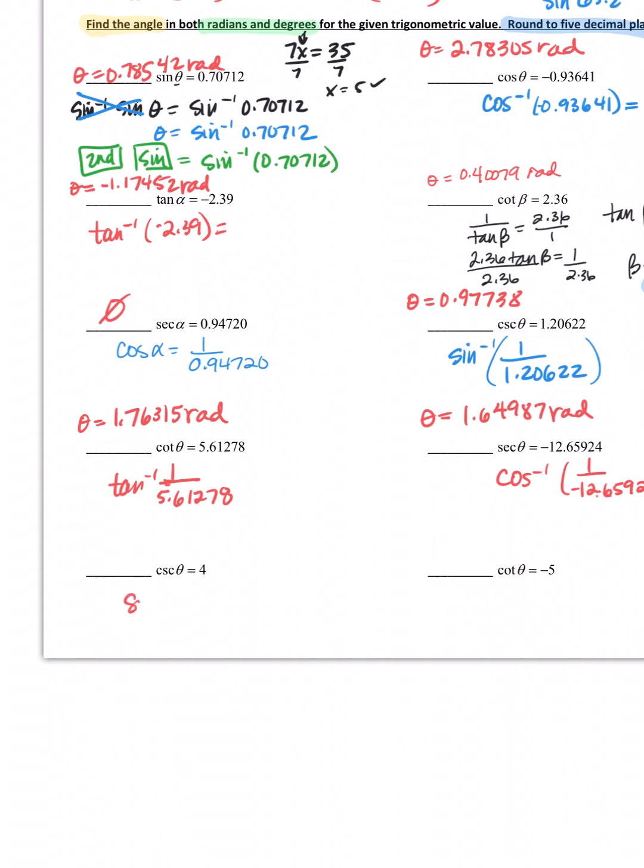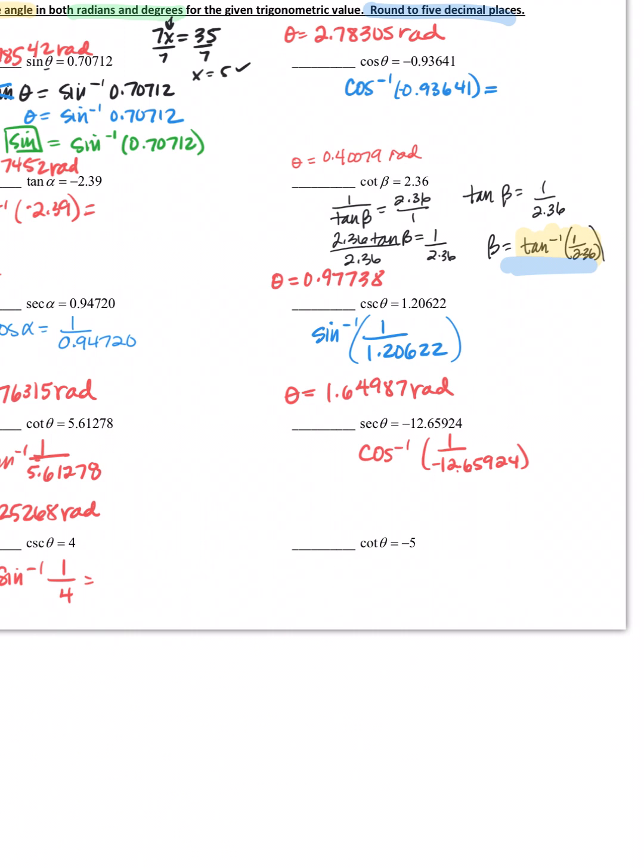Cosecant, that's the inverse sine. 1 over 4 would give me a radian measure of 0.25268 radians. And then cotangent, it's the inverse of tangent. I get a radian measure of 0.19740.